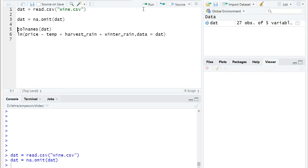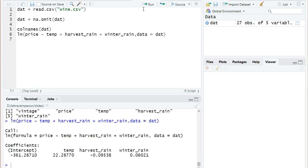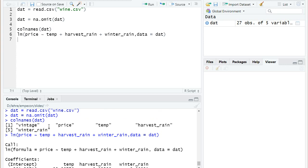Here's again the code we have written in R so far. We loaded the dataset, we omitted the missing values, I showed the column names, and ran the linear regression with only the three weather variables as explanatory variables. If you look at the column names, you see that we don't have the age of a vintage as a column, but we can simply compute it.